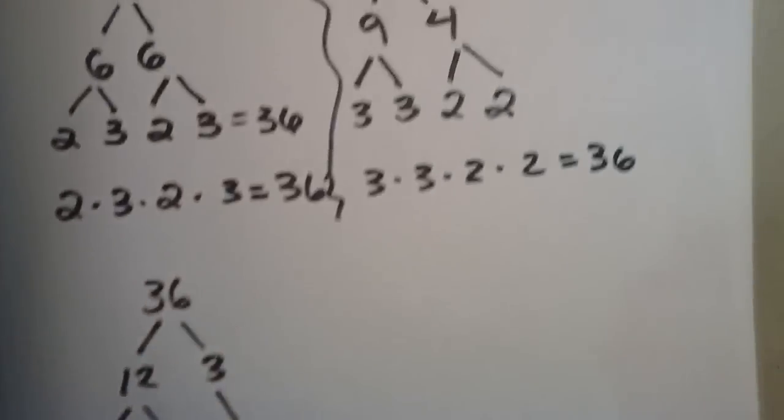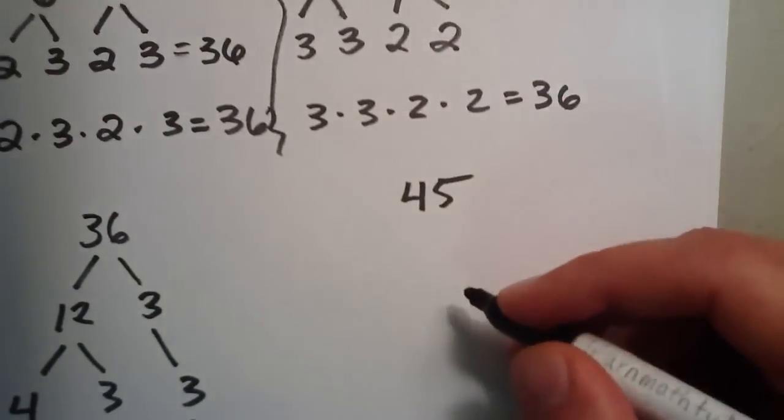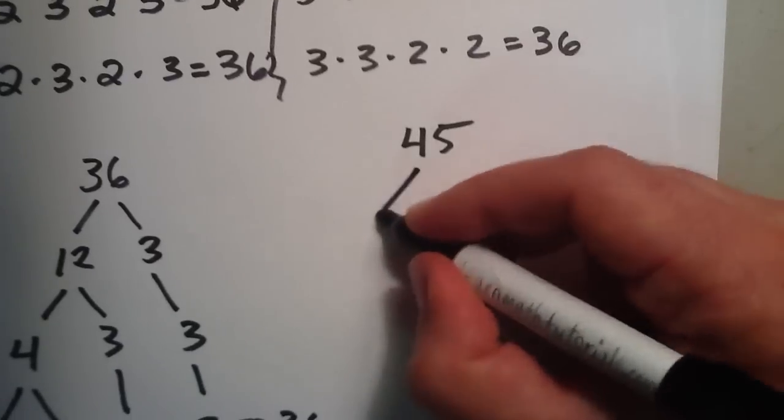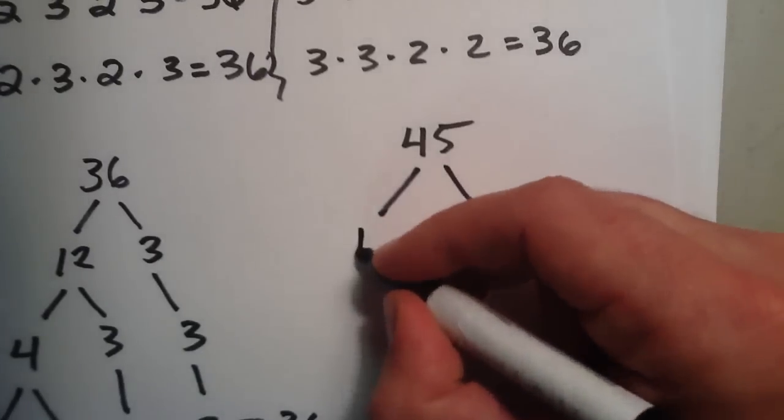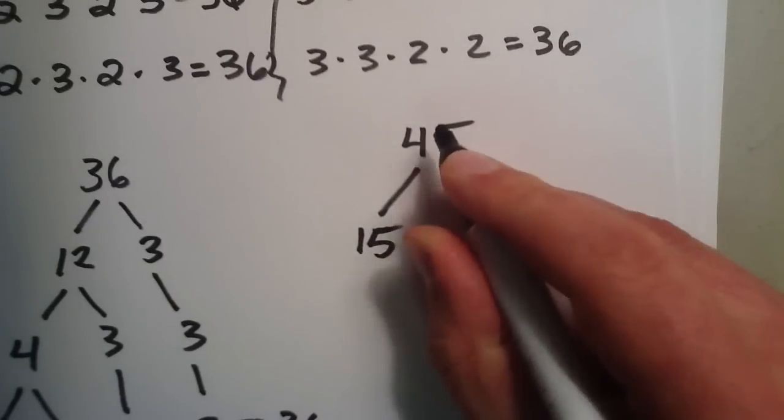So let's try another number. Let's try the number 45. Now, one way we could do this: we could say 45 could be broken into 15 times 3. 15 times 3 equals 45.